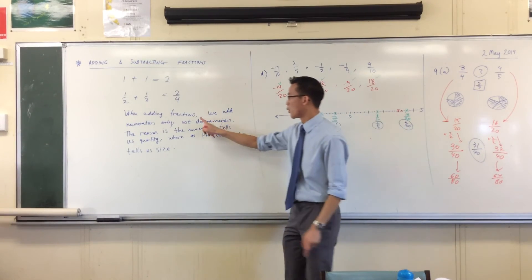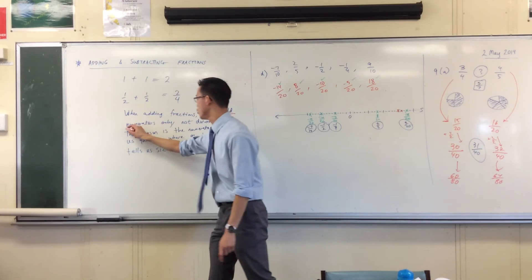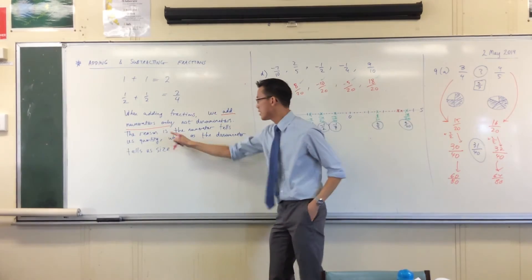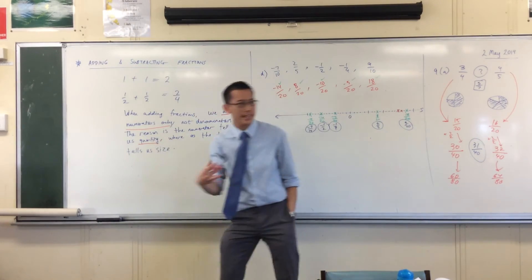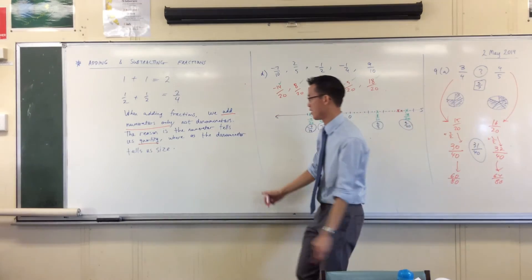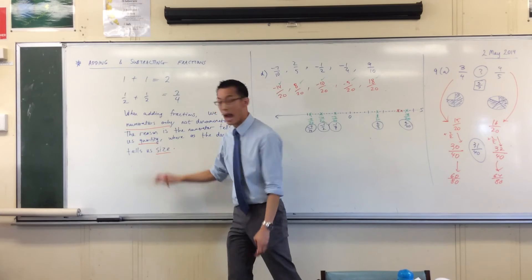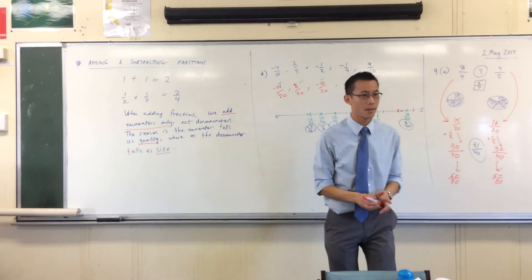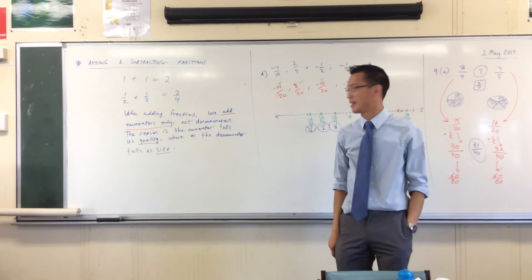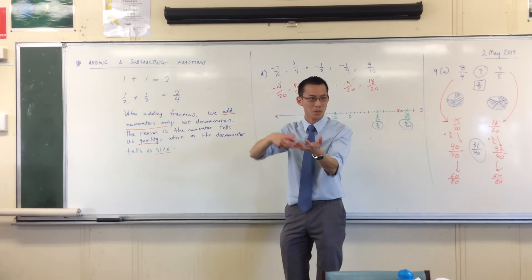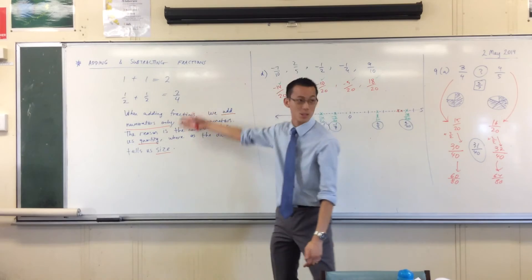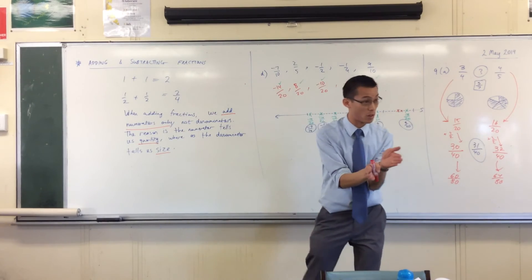So, parts to underline here. We add numerators only - that's important, underline that. The reason is the numerator tells us quantity. When you're adding things up, the question is how many do I have? It's a quantity question. Whereas the denominator tells us how big are all these things you're adding up? If the denominator is larger, the things are smaller. A half - that's a pretty big chunk of the pie. If we're adding 100ths, just slice a little bit. If we're adding thousands or millions, they get smaller and smaller and smaller.